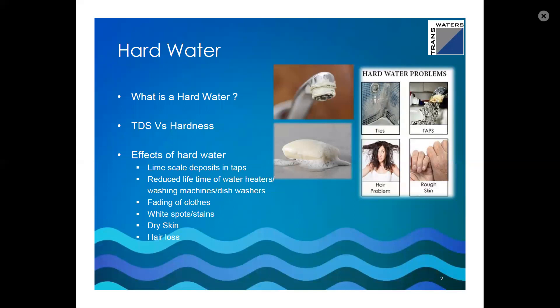Before we get into understanding the functionality of a softener, we need to know what our sources of water are, where we need a water softener, and what specific contaminants we need to look at when picking the right softener. We categorize water sources into two things: surface water and groundwater. Surface water comes from rivers and lakes, directly from rain, and typically does not have a lot of dissolved mineral salts in it. Groundwater, taken from open wells or bore wells, tends to have a high amount of dissolved mineral salts.